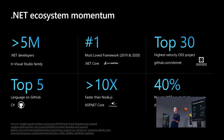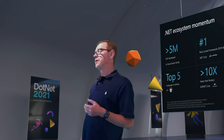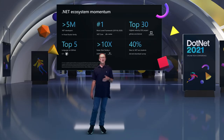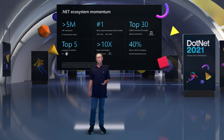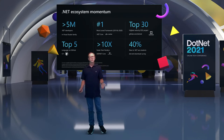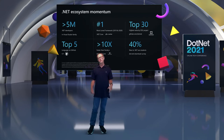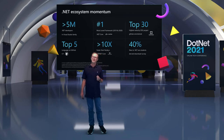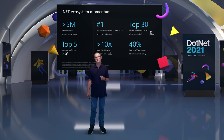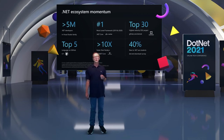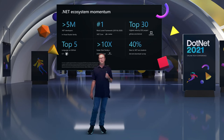We're also a top five language on GitHub. And performance: greater than 10 times Node.js performance. When we reimagined .NET, we decided to focus on performance — we want to make sure if you built an app in .NET, it was the fastest it could be. This means it's going to save you money when you host it in the cloud. Performance is part of the DNA of our team now.